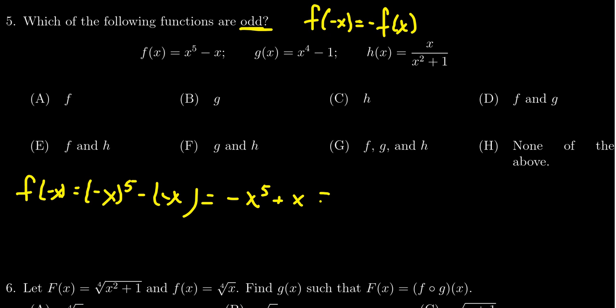So this expression becomes negative x to the fifth and we get plus x right here, for which that is not f of x—so notice this is not an even function. On the other hand, if we factor out a negative sign, this gives us x to the fifth minus x, which is f of x. This is negative f of x, and so this is indicative that f is in fact an odd function.